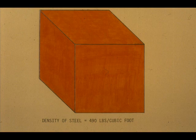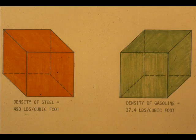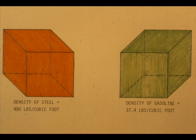The density of steel is 490 pounds per cubic foot. The density of gasoline is 37.4 pounds per cubic foot.